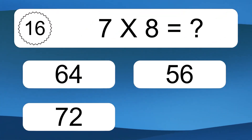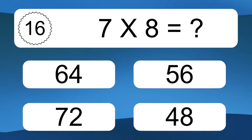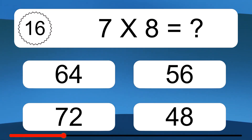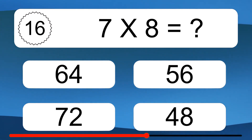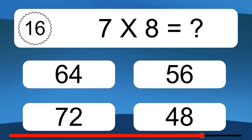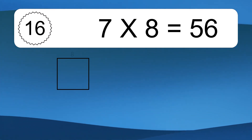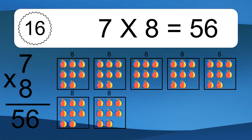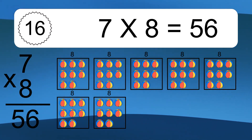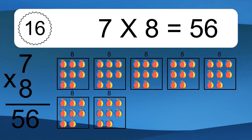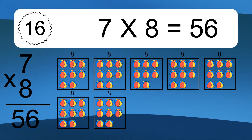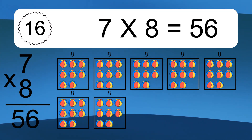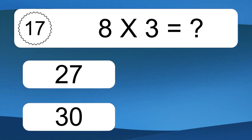7 times 8 equals what? This equals 56 balls. We have boxes and each box has 8 colorful balls inside. If you count all the balls in all the boxes together, you will have 7 times 8 balls. This equals 56 balls.